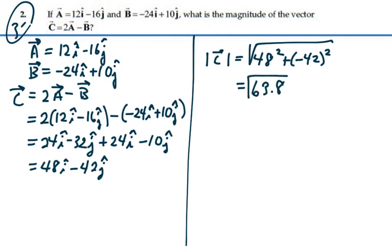So that is the magnitude of vector C, which is 2A minus B, 63.8.